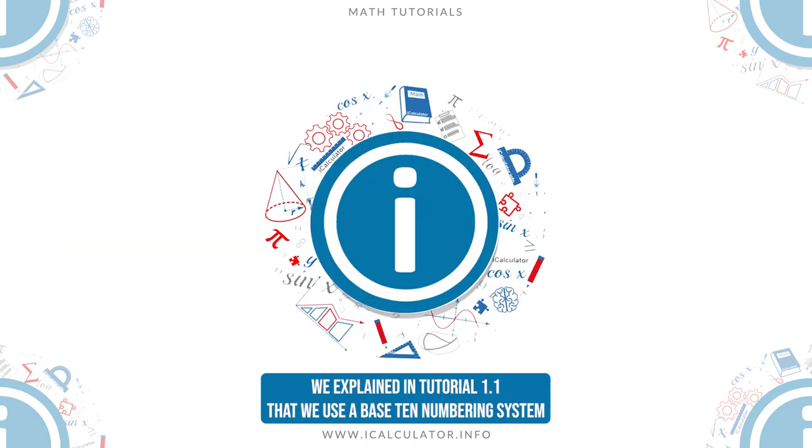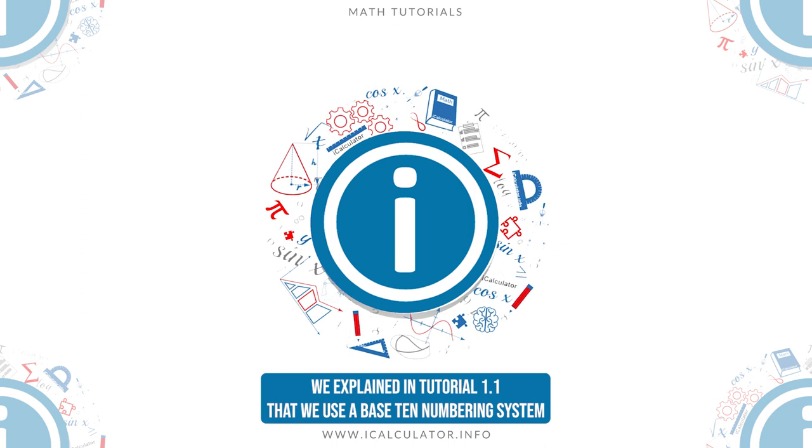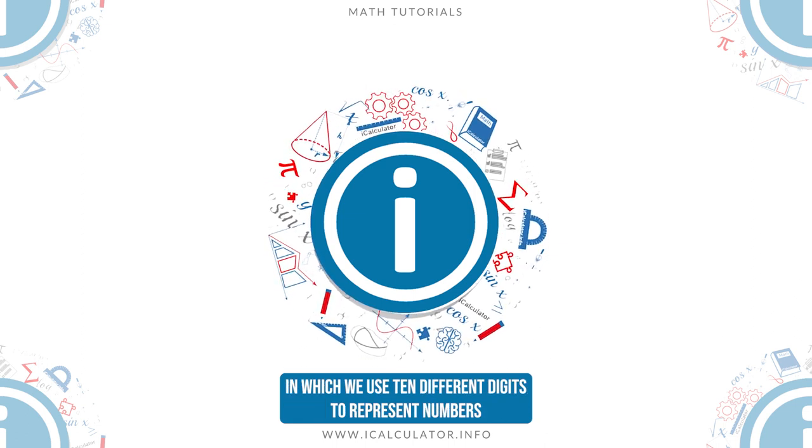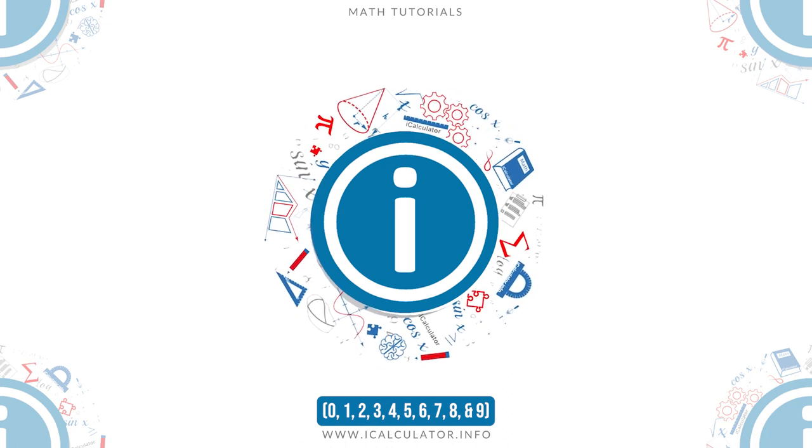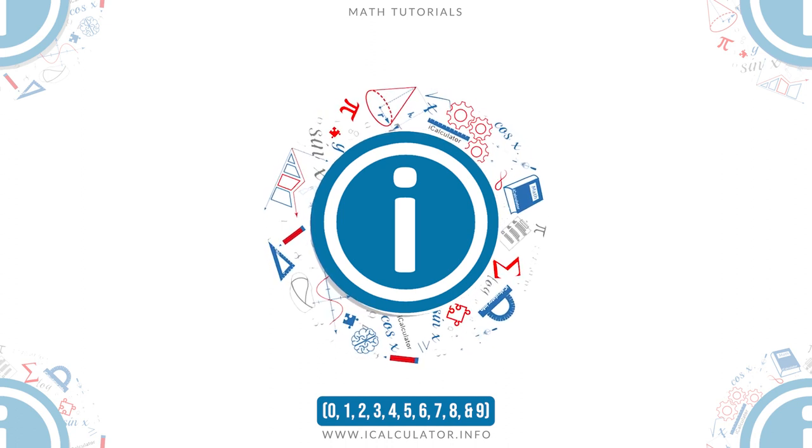We explained in Tutorial 1.1 that we use a base 10 numbering system, in which we use 10 different digits to represent numbers: 0, 1, 2, 3, 4, 5, 6, 7, 8, and 9.